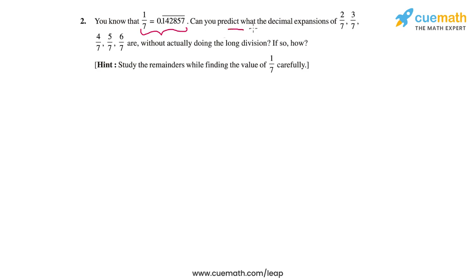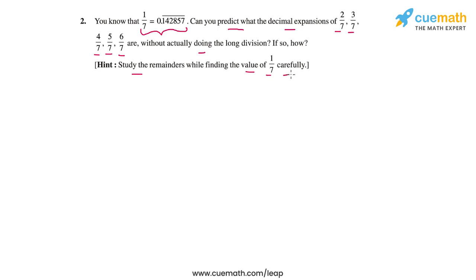Using this, can you predict the decimal expansions of 2 by 7, 3 by 7, 4 by 7, 5 by 7, and 6 by 7 without actually carrying out the long division process? The hint says: study the remainders while finding the value of 1 by 7 carefully.